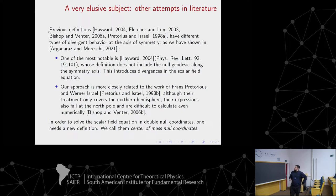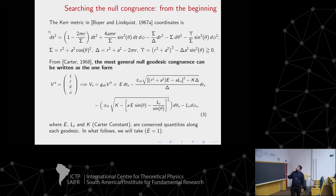This is the first part of the talk - the context and the problem. Now I'm going to tell you how we were able to solve this problem and make a new definition of null coordinates in Kerr. If we already have intuition, it is very important to get the correct null congruence. So how do we find it? We have to start from scratch. From the work of Carter, we know that the most general null congruence has this tangent vector.